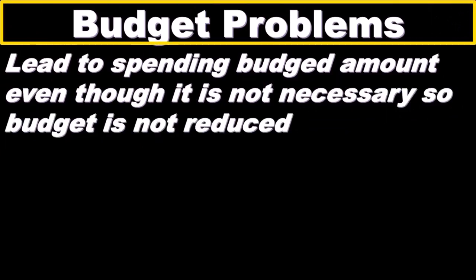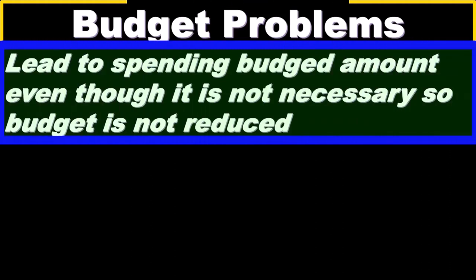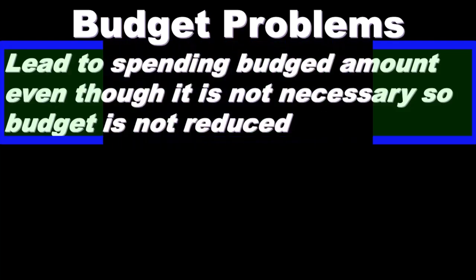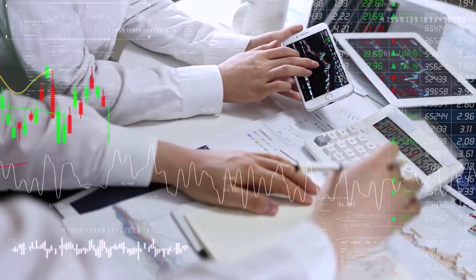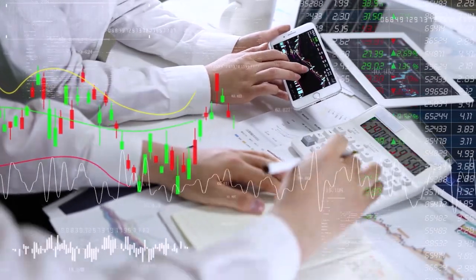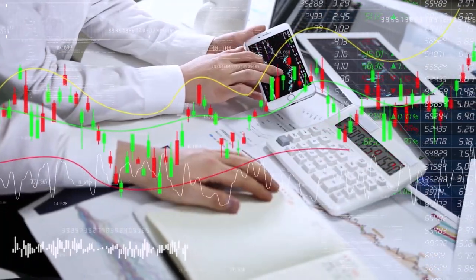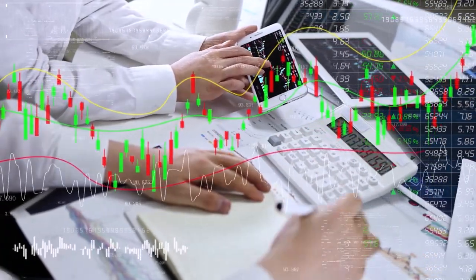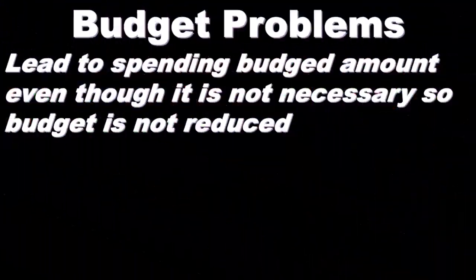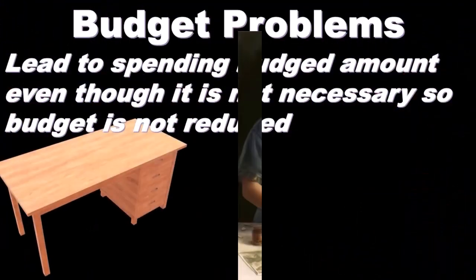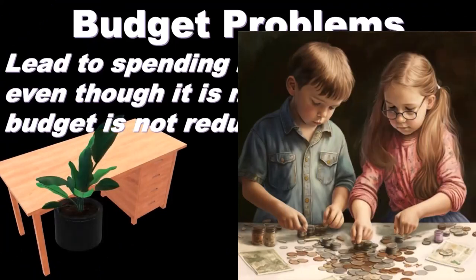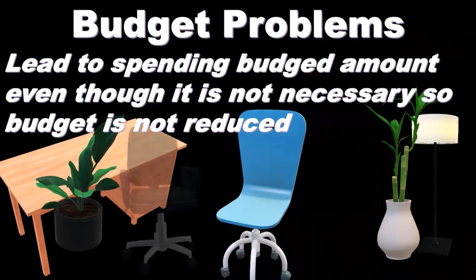Another problem inherent in the budget is that it could lead to spending an amount equal to the expenses allocated to a department. If a department is allocated a certain amount to spend, there's an incentive to spend everything allocated, because if they don't, they likely won't be allocated that much in the future. This can lead to unnecessary spending — for example, buying extra items they don't need — often happening at the end of the month or at the end of the budgeting period.